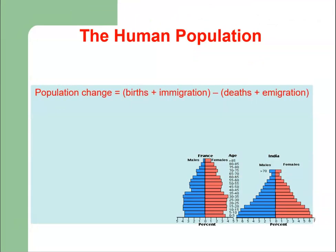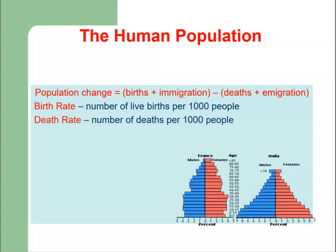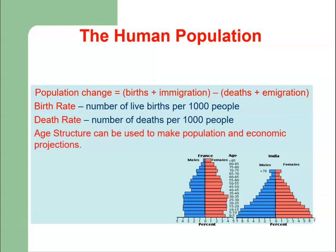Human population change equals births plus immigration minus deaths minus emigration. Immigrants are those who come from other countries to the country under consideration, while emigrants are those who go out of a country to another country. Deaths and emigration are negative terms, and births and immigration are positive terms in the population change equation. Birth rate means the number of live births per thousand people; death rate means the number of deaths per thousand people. Age structure can be used to make population and economic projections.